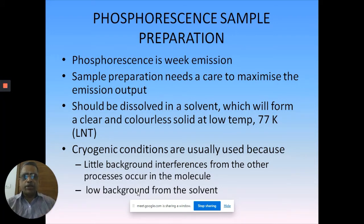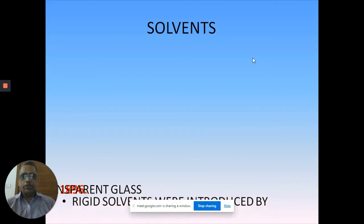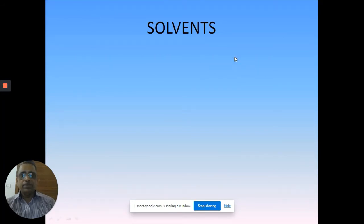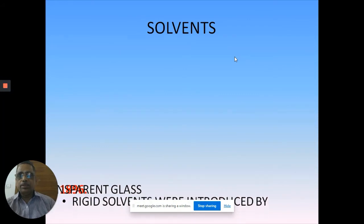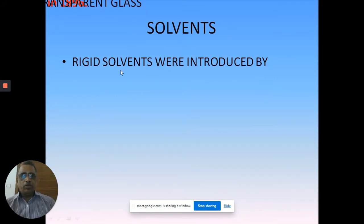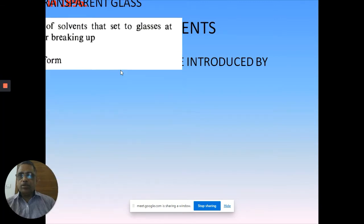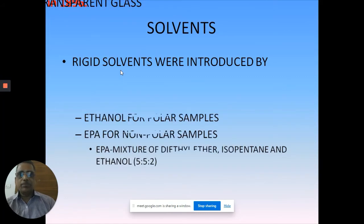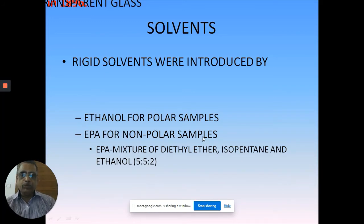When you go for the solvent, you cannot use water - it will give you an opaque glassy material. You should have a transparent glass where you can have rigid glasses. Ethanol is always used for polar solvents. EPA, which is a mixture of three solvents, is used for non-polar samples. EPA is a mixture of diethyl ether, isopentane, and ethanol in the ratio of 5:5:2.